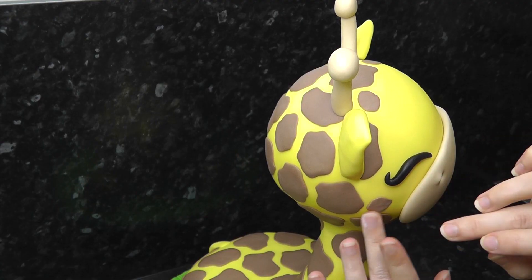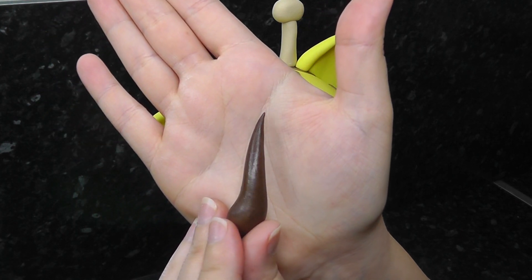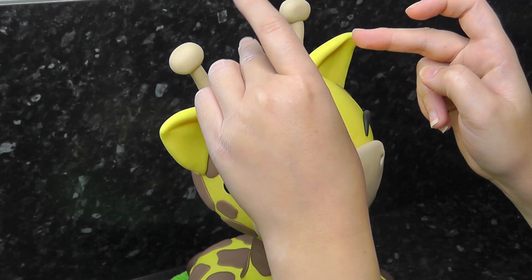Almost there now. We want to fill in any gaps around the front of the face with small brown splodges. Taking more of the dark brown, an additional option is to create little spiky hair tufts.